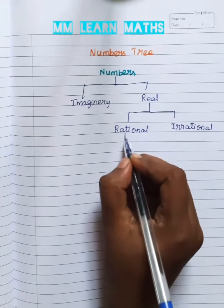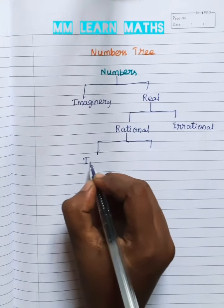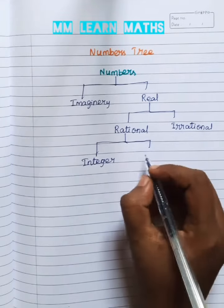Rational numbers are two type: integer and then fraction.